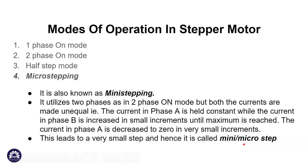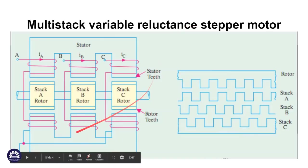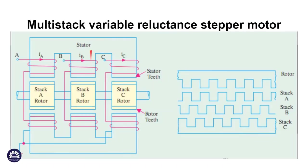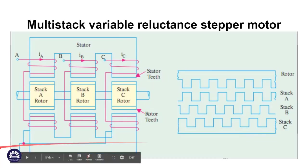The multi-stack variable reluctance stepper motor is the next type. It is similar to the variable reluctance stepper motor. In this motor, the stator and rotor are stacked, and the rotor is mounted on the shaft. This is the main construction concept.